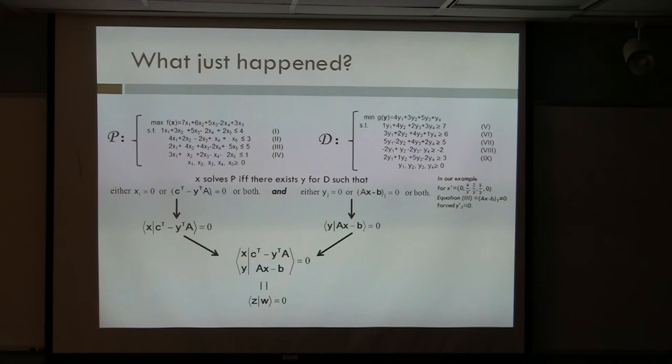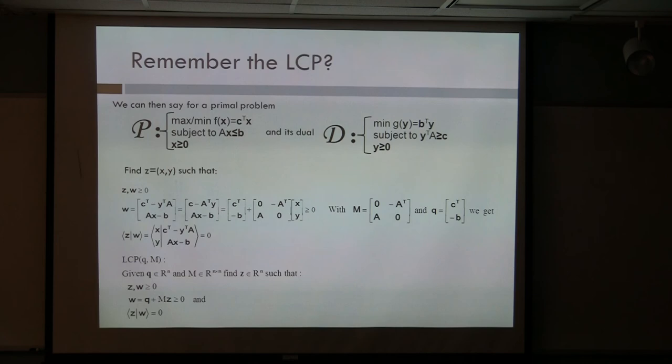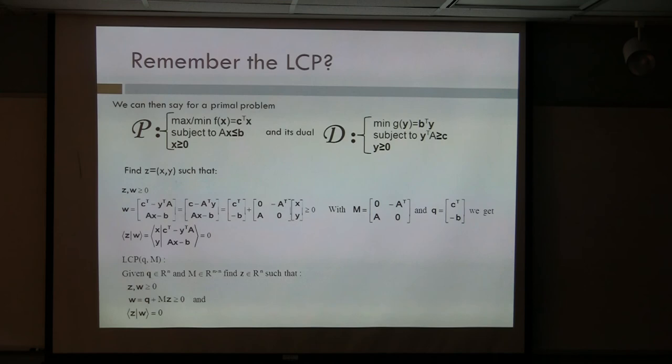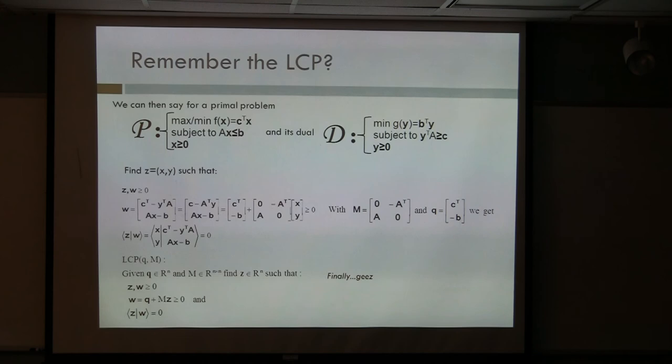We were forcing the third coordinate in the dual space to be zero by the fact that we did not have equality in equation three of the primal space. So we're talking about the linear complementarity problem. We call our vector w the vector of those inequalities — the inequalities for the primal and the inequalities for the dual. Z is the coordinates for the primal and dual. The inner product always has to be zero. This is a specific case of the linear complementarity problem, where M is that matrix with zeros on the diagonal.